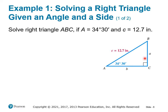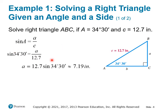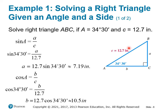We have angle A and the hypotenuse. To find side a — opposite angle A — we have opposite over hypotenuse, which is sine. So sine of A equals side a over side c. We plug in the numbers and calculate, getting approximately 7.19 inches. To find side b, that's the adjacent side over the hypotenuse, which is cosine. Cosine of A equals b over c; solving gives side b as roughly 10.5 inches.